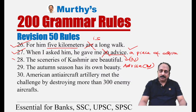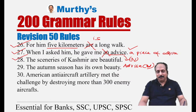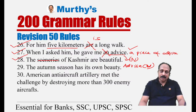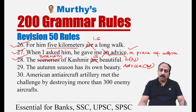Sentence twenty-eight: 'The sceneries of Kashmir are beautiful.' There are two errors. First, 'scenery' is an abstract noun that cannot be used in the plural form — it is not 'sceneries.' Second, since 'scenery' is singular, the verb must be 'is,' not 'are.' The correct sentence is: 'The scenery of Kashmir is beautiful.'